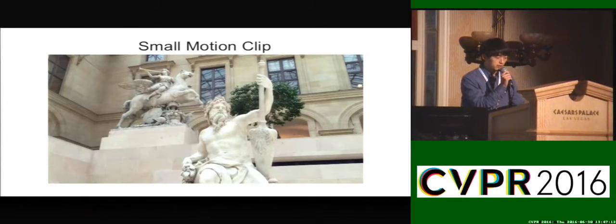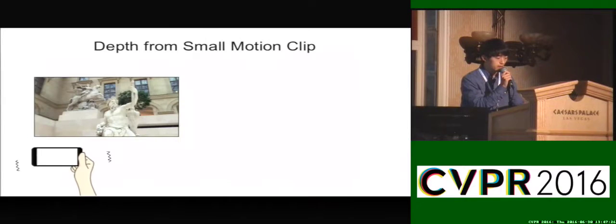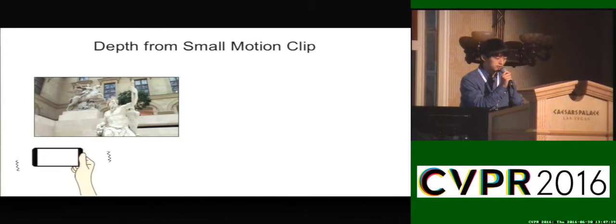A small motion clip means a short video clip with small viewpoint variation. This video, for example, contains only one second of footage where the viewpoints are slightly changing. Let's think about how we capture an image. Usually, we just grab the camera, point it to the scene, hold it steady, and shoot. During this process, in fact, we generate so many small motions, such as pointing, handshaking, breathing, and shutter pressing motions.